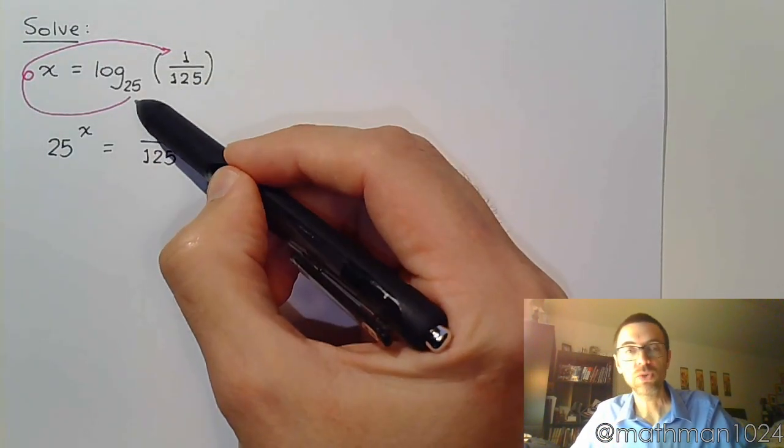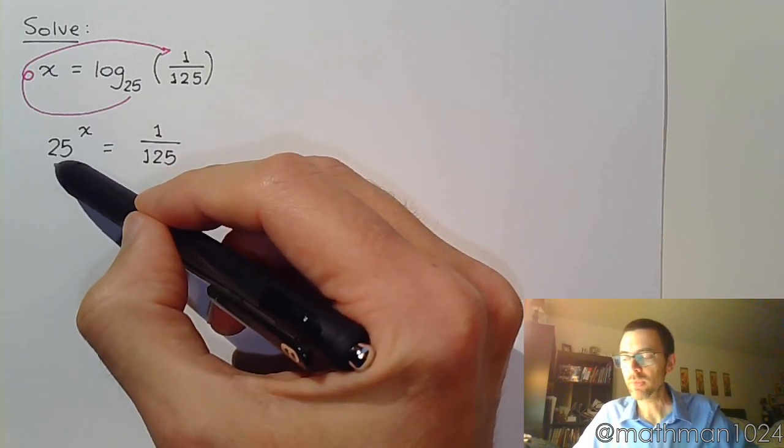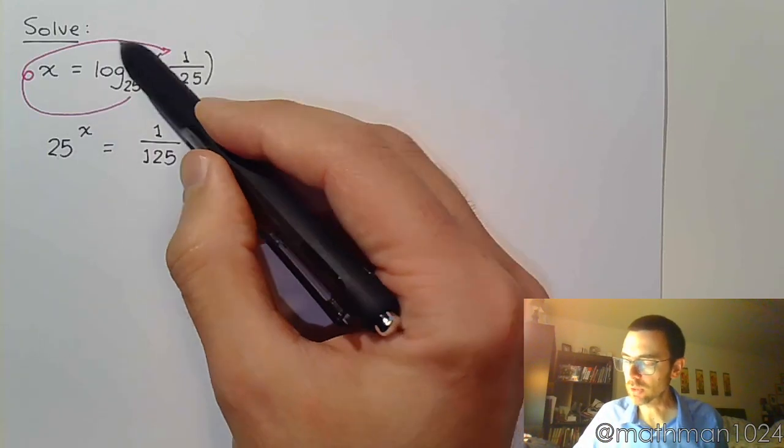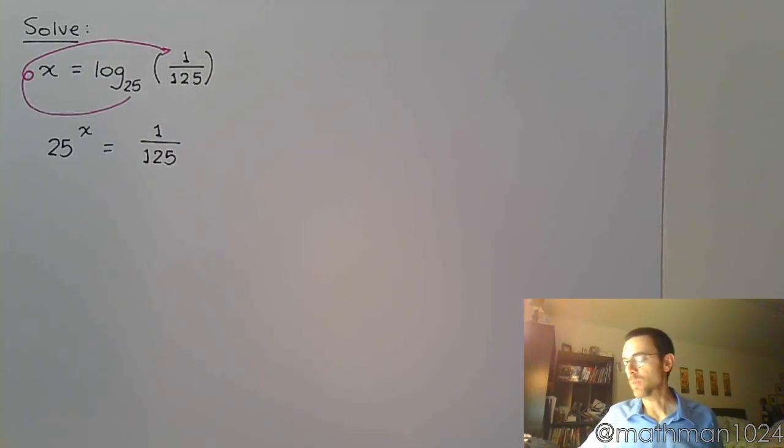Keep in mind that when we read this, this is log base 25. So when I write the exponential equation, my base is 25. We also mentioned that the answer to the log is the power. So the log equals the power. Let's work this out.